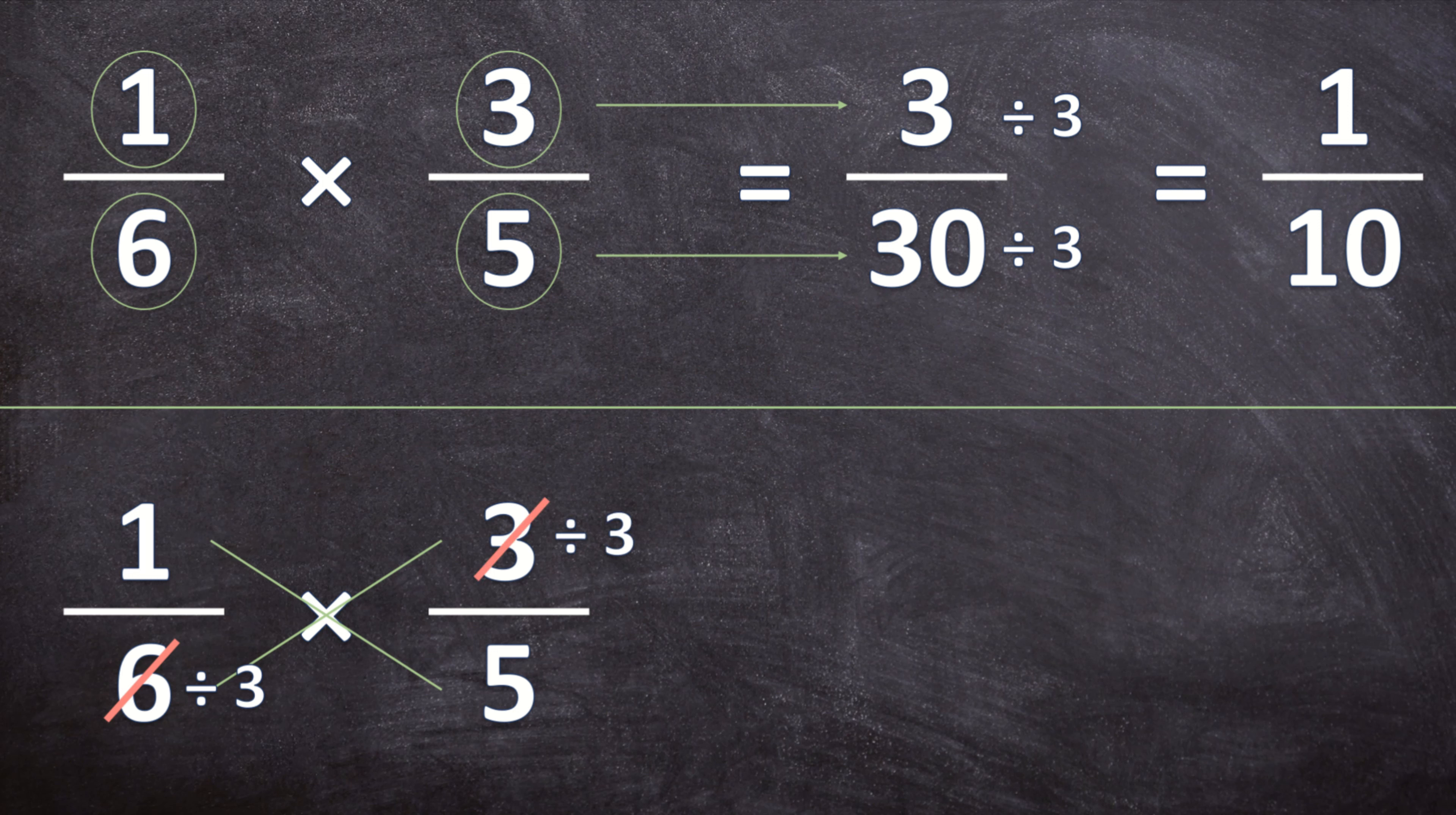So our first fraction is going to be 1 over 2 and our second fraction is going to be 1 over 5. And now that our fractions are simpler and we did cross cancellation we can just multiply the numerators and denominators. So 1 times 1 is 1 over 2 times 5 is 10.